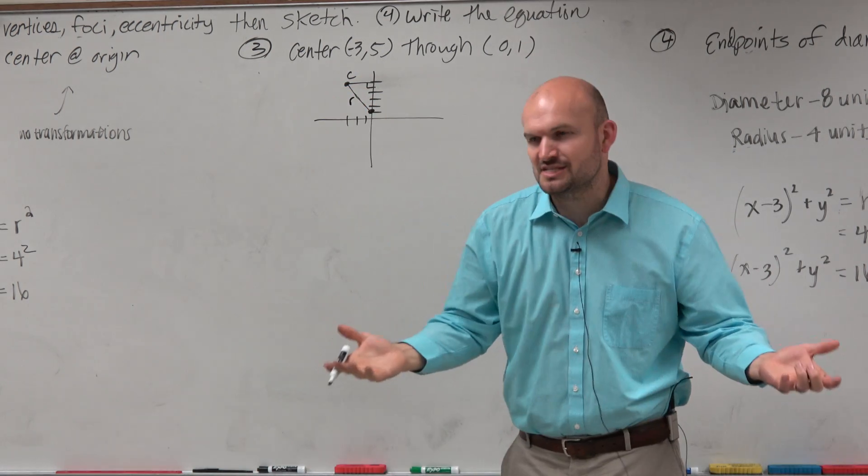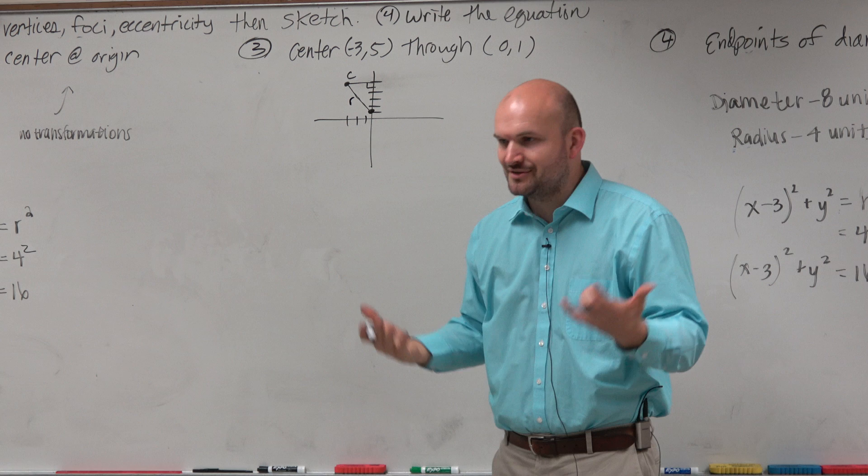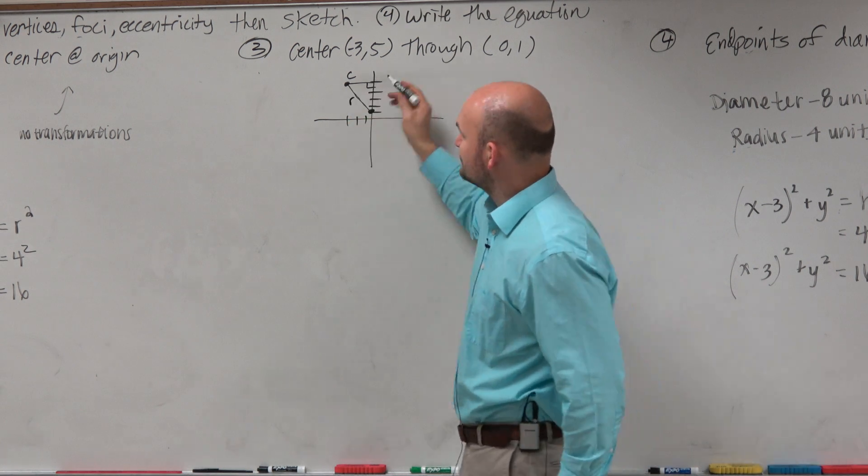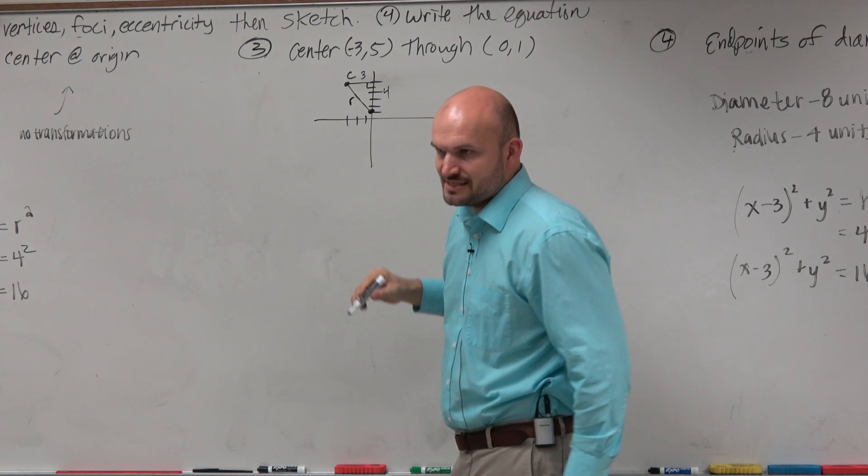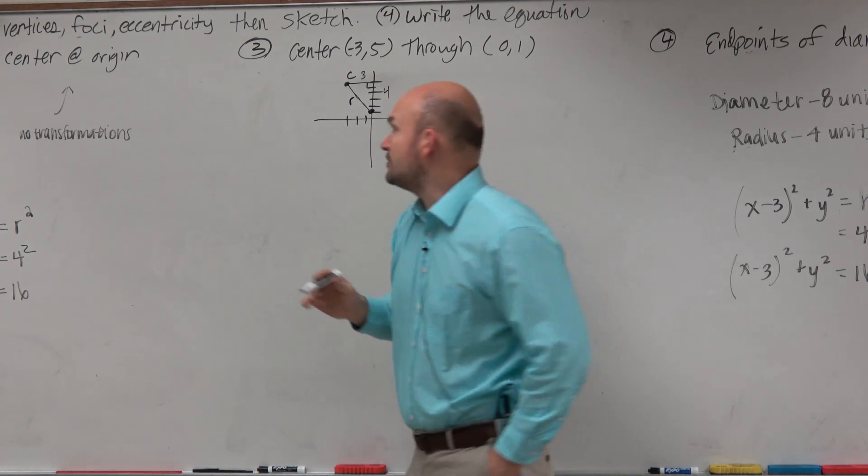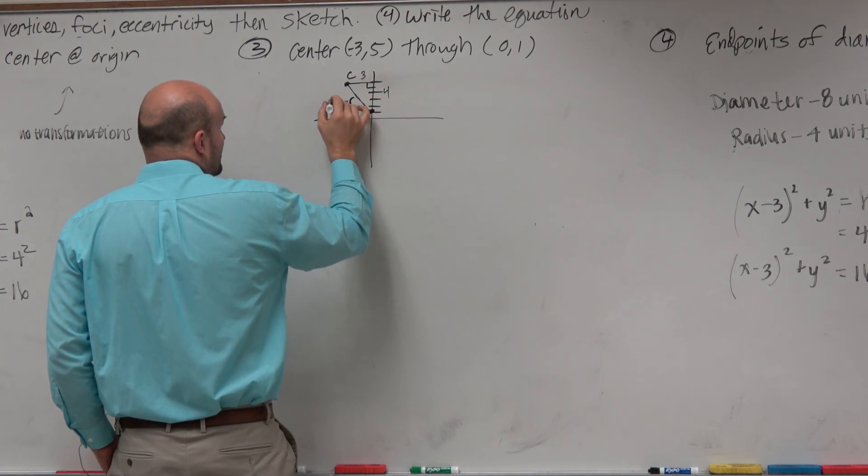Where does the distance formula come from anyways? Right triangle and Pythagorean theorem. So this distance from here to here is 3. This distance from here to here is 4. It doesn't take us long to figure out this is a Pythagorean triple, where r is going to equal 5.